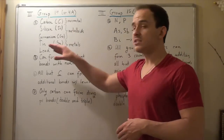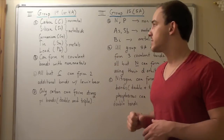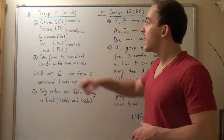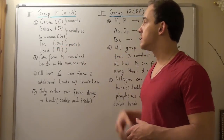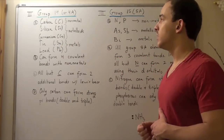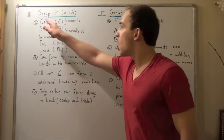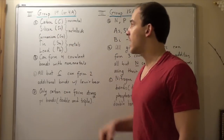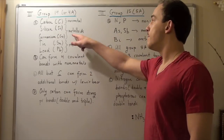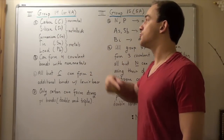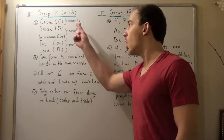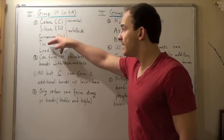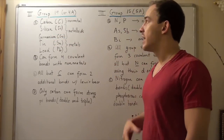This group consists of five elements, and the important elements are listed below. We have carbon, which is a nonmetal. We have silicon, which is a metalloid. We have germanium, which is also a metalloid. And we have two metals, tin and lead.